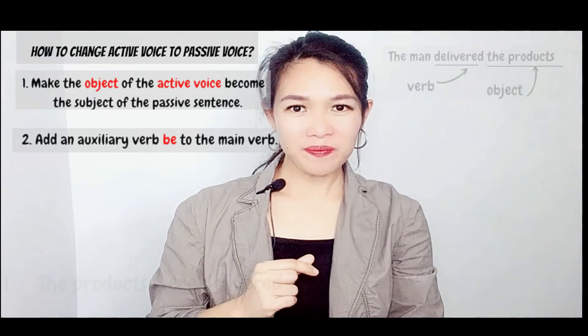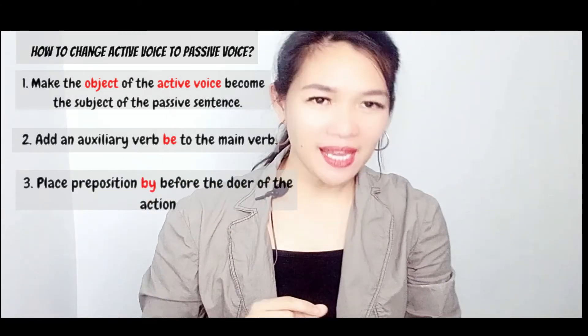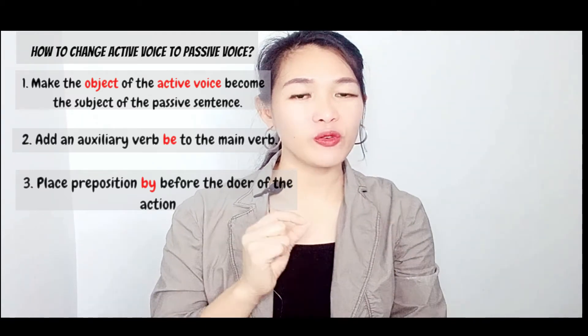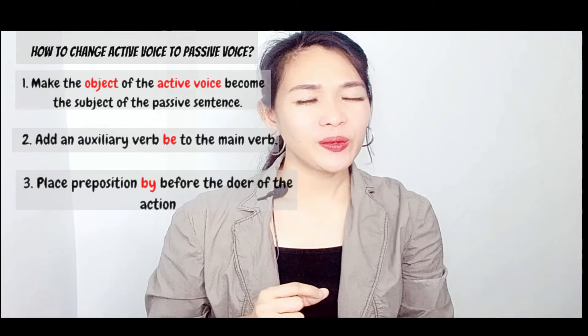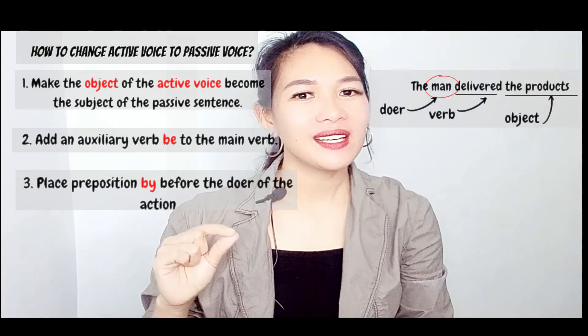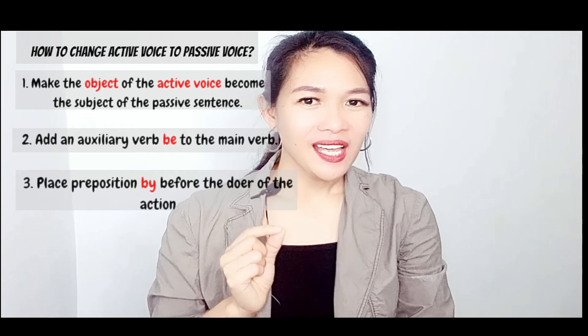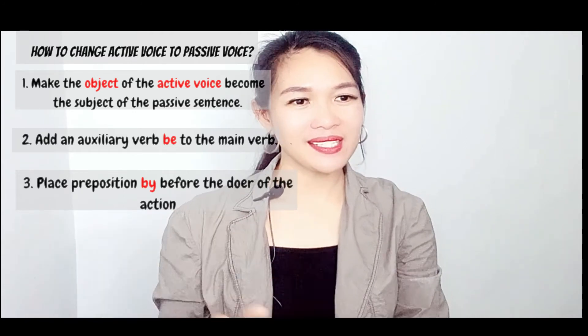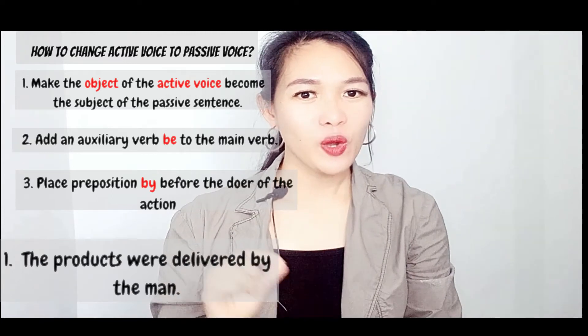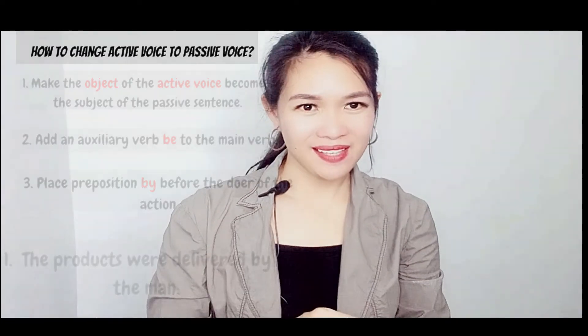Now, step three: place the preposition 'by' before the doer of the action. So who is the doer of the action? The man. So you have to add 'by the man.' The passive sentence is now: 'The products were delivered by the man.' And I hope you understand it. You could review this video again if you're still confused and review the steps on how to convert active sentences into passive sentences.